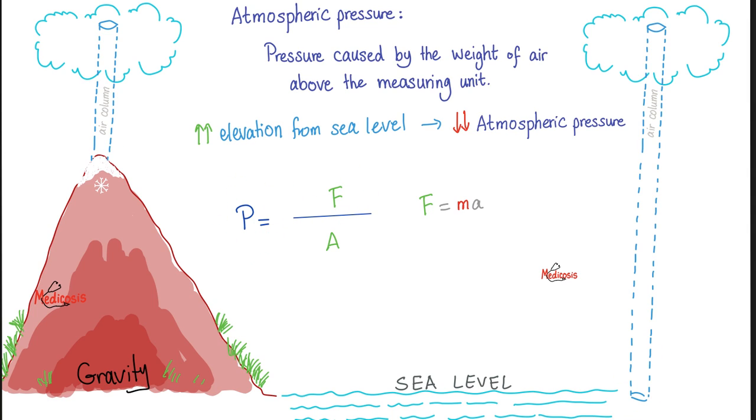At sea level, what's the atmospheric pressure? 760 millimeters of mercury. And since this is the same as the atmospheric pressure, we call this 1 atm. So 1 atm equals 760 torr or 760 millimeters of mercury. This is at sea level. But if you go up a mountain, this will go down.